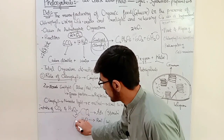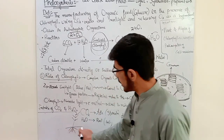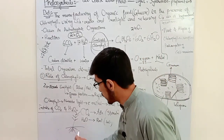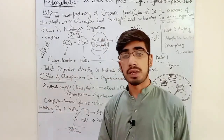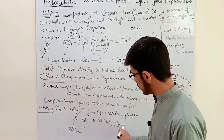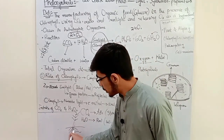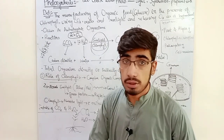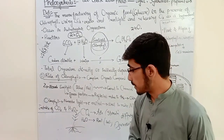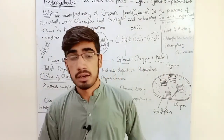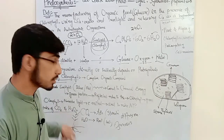Water is absorbed from the soil by the roots of the plant. Water moves from the soil into the roots by the process of osmosis — similar to diffusion. Through osmosis, water enters the roots, travels up through the xylem, and is transported to the leaves for photosynthesis.